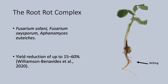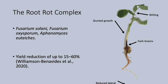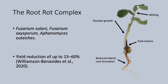The main symptoms of root rot are wilting, stunted growth, dark lesions, and reduced lateral root formation, which overall reduces plant health and yields by up to 60%. This is important as peas fix nitrogen from the atmosphere and they're also high in protein, causing particular interest with the rise of meat alternatives.